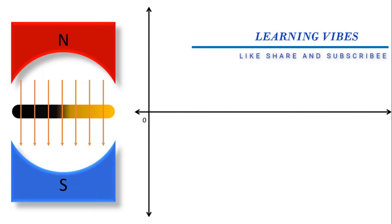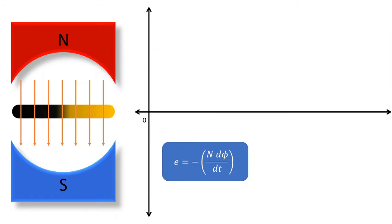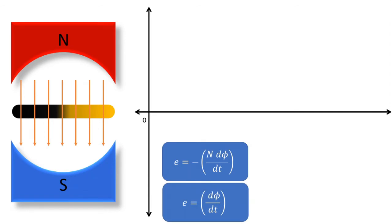Before giving motion to this conductor, let's understand through which equation the EMF will be induced. That equation is E equals minus N dΦ/dt, where the minus sign represents the direction of induced EMF and N represents the number of turns. Since we have a single conductor, N equals 1, and ignoring the minus sign for now, our modified equation is E equals dΦ/dt — meaning induced EMF is directly proportional to the rate of change of flux.